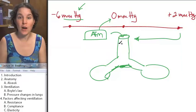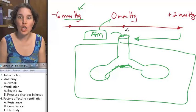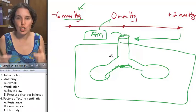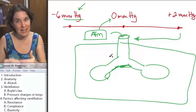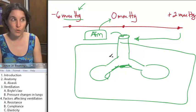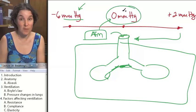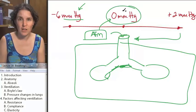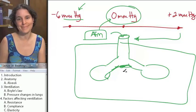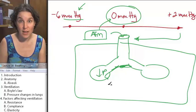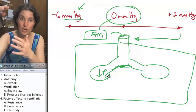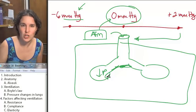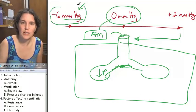Therefore, if you want air to go into the trachea, if you want air to go into the lungs, what are you going to have to create inside the lungs? Pressure out here in the air is automatically set at zero. How can we get it to move?